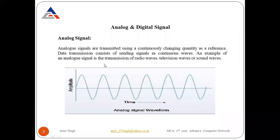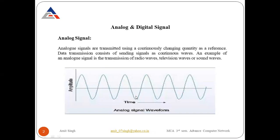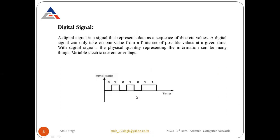Continuous values means that with respect to time, whenever the time changes, the value of the signals changes. As shown in the diagram, the left side shows amplitude and the downward axis shows time. At time t1 the signal value is different from time t2. This can happen in the case of analog signals.